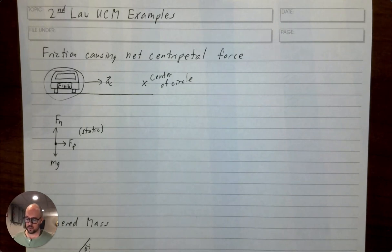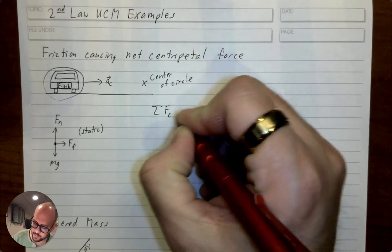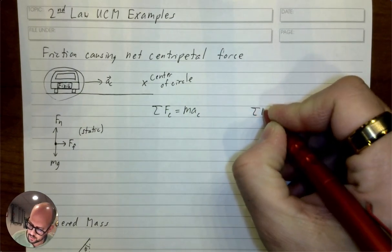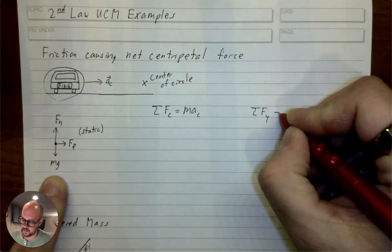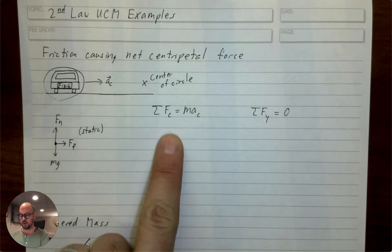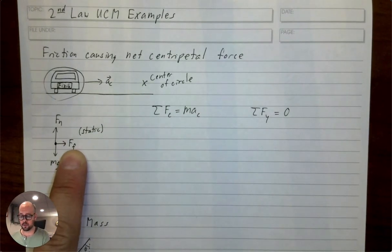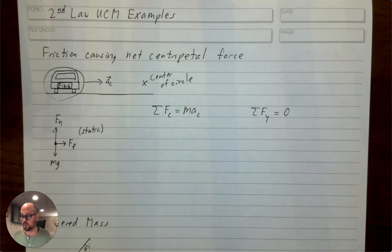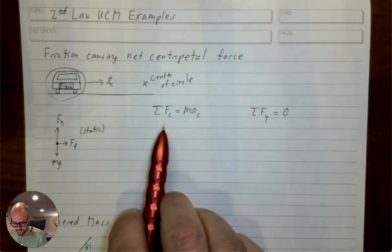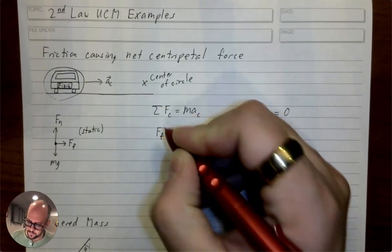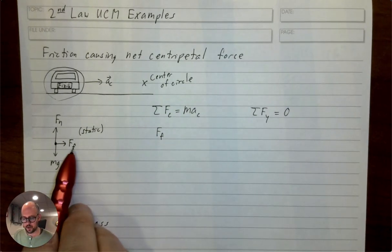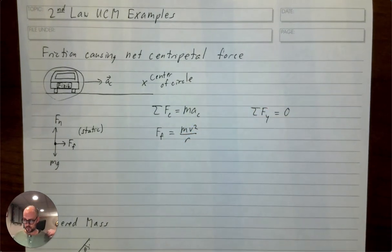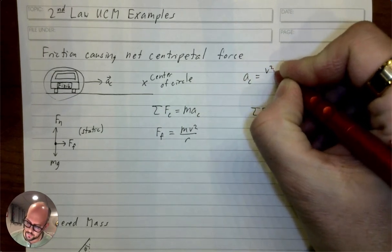Let's look at what Newton's second law says. We have the centripetal direction and the y direction. When analyzing circular motion, the first direction you identify is the centripetal direction — always toward the center of the circle. Any remaining forces fall in whatever other direction is left. In the centripetal direction, there's only one force: friction. And that causes the centripetal acceleration.